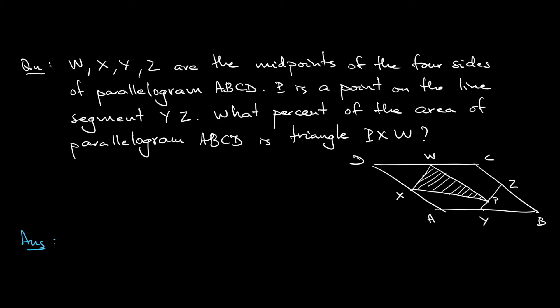First thing to notice is that the area of parallelogram WXYZ is basically half of the whole figure, which is parallelogram ABCD, right? Because X, Y, Z, and W are all midpoints. So if you connect W, X, Y, and Z, this area is in fact half of the whole figure ABCD.